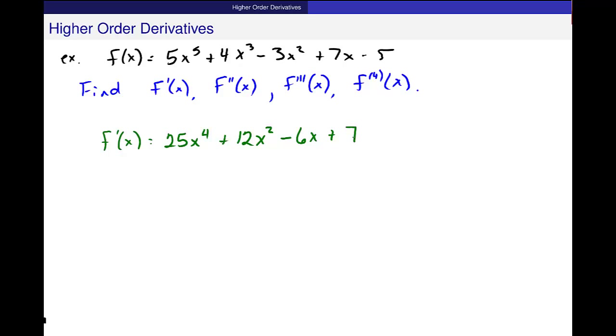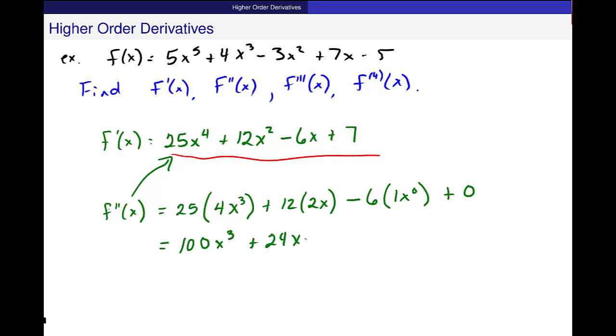There's my first derivative. Now to take the second derivative, f double prime of x, I'm looking at this function right here, and I'm just going to take the derivative of that using the same rules that I have been using. So really I get 25, just to make this clear, 4x cubed, right? Plus 12 times 2x, minus 6, and then the derivative of x is 1x to the 0, right, or just 1. And the derivative of 7 is 0.